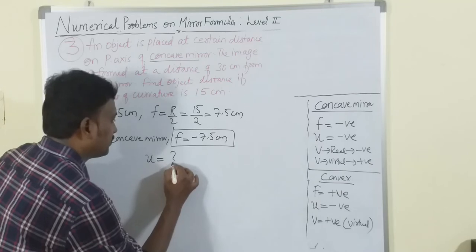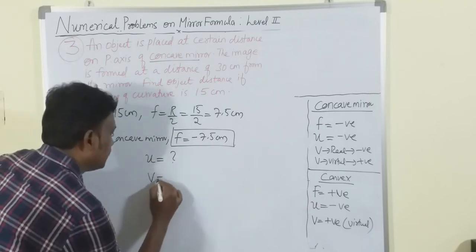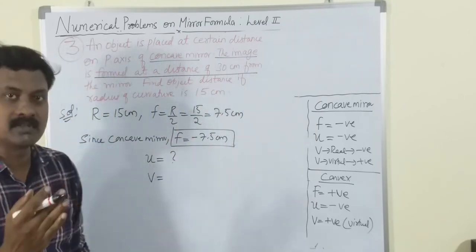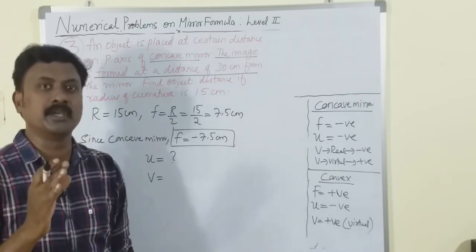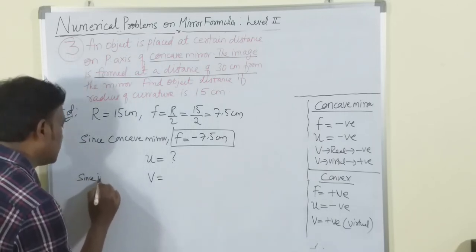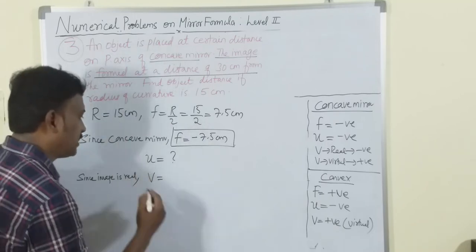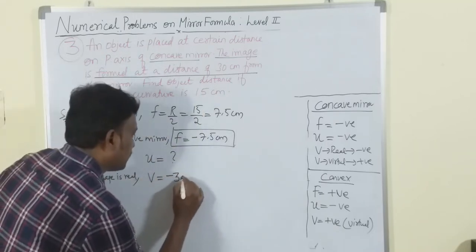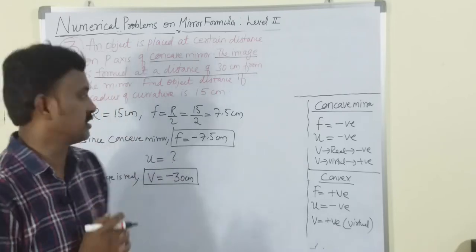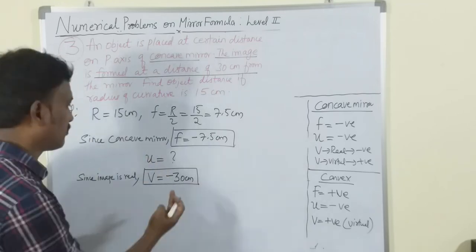In previous problems we were given u; here they are asking for u. The image is formed at 30 centimeters from the mirror - 'image is formed' means it is obtained on a screen, meaning it's a real image. Since the image is real, v is taken as -30 centimeters.